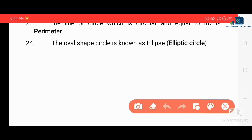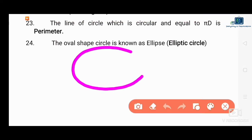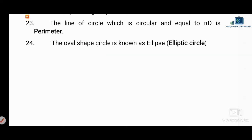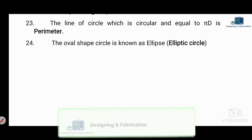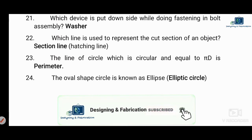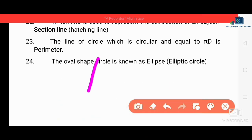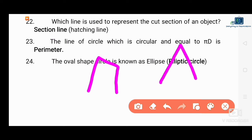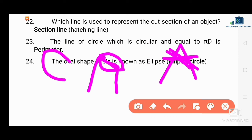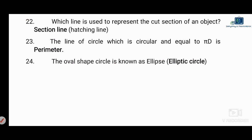Next question: the oval shape is known as an ellipse. An oval or elliptical shape is called an ellipse. In isometric view, a circle appears as an ellipse. The angle of inclination determines the elliptical shape of a circle in isometric projection.